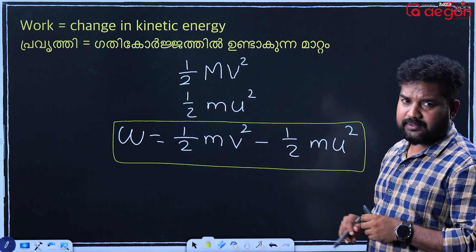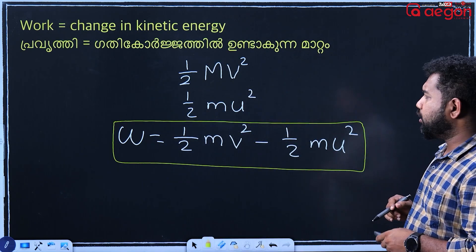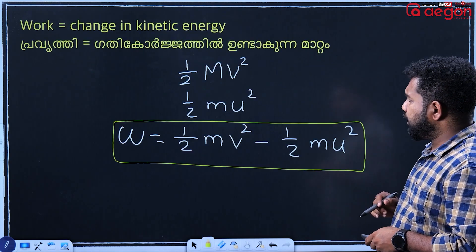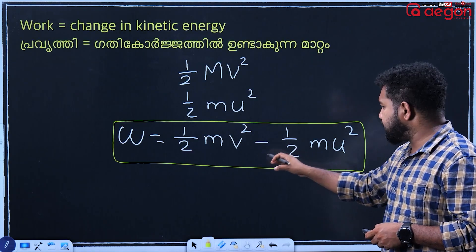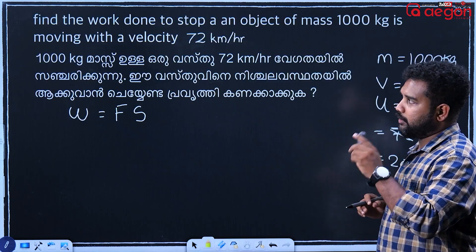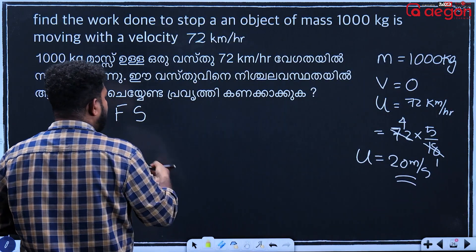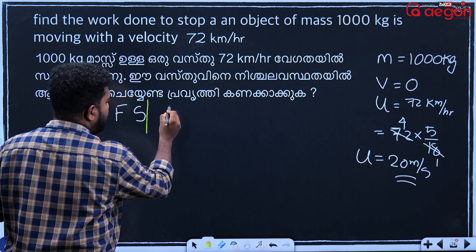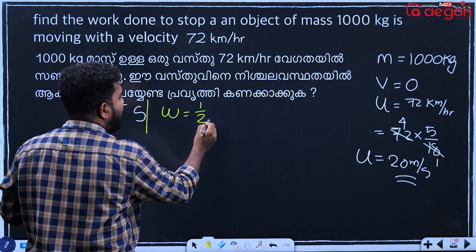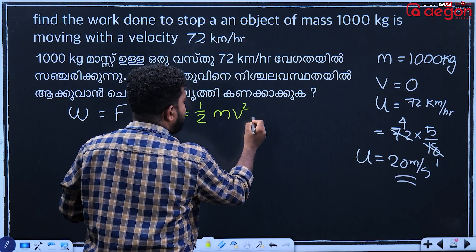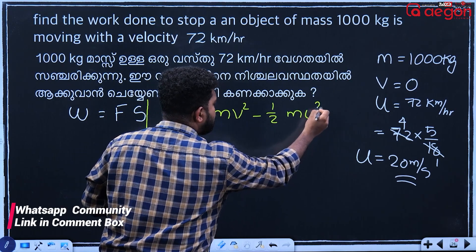This is what we have done. We have to break it up and get the equation. Half mv squared minus half mv squared. Work is equal to half mv squared minus half mv squared.